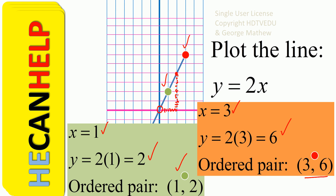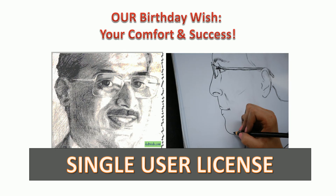One common mistake that students make is plotting just one point and giving it to the teacher like that — and that is not a line. You have to put two points, join those two points, and draw the line. Then you can extend it to the left and to the right. This is George Matthews signing off — good luck.